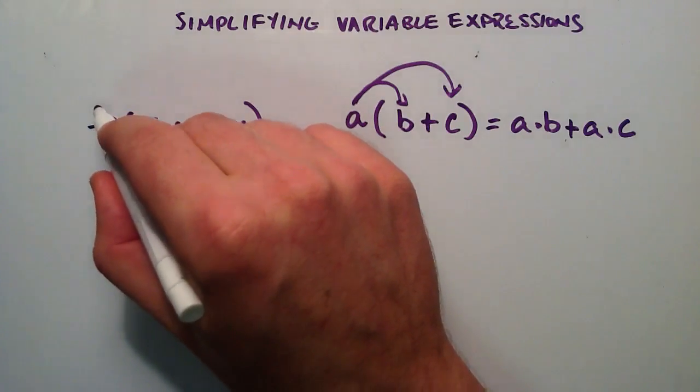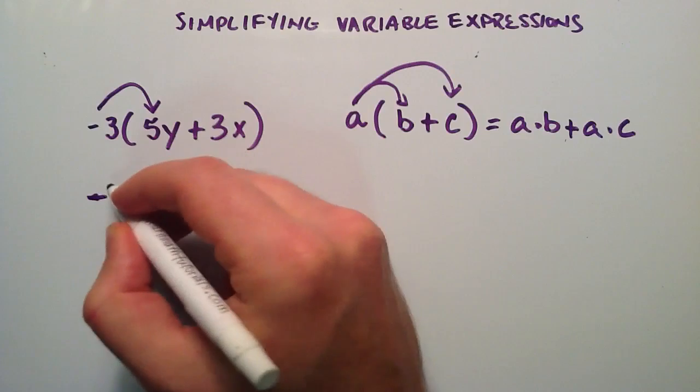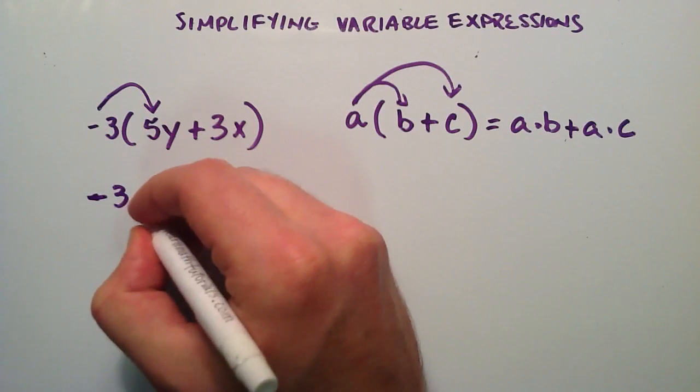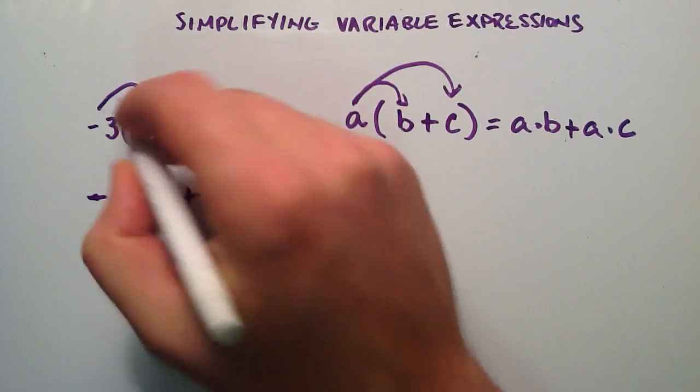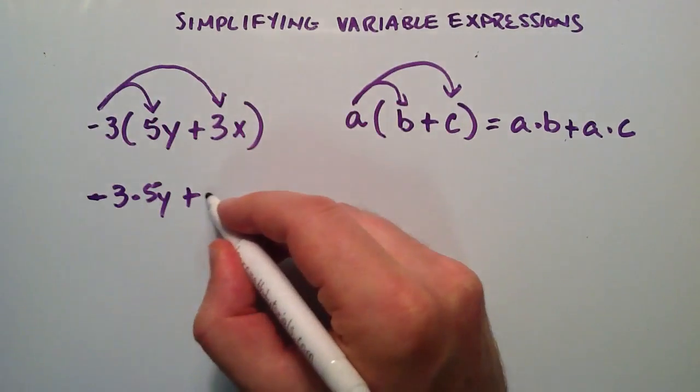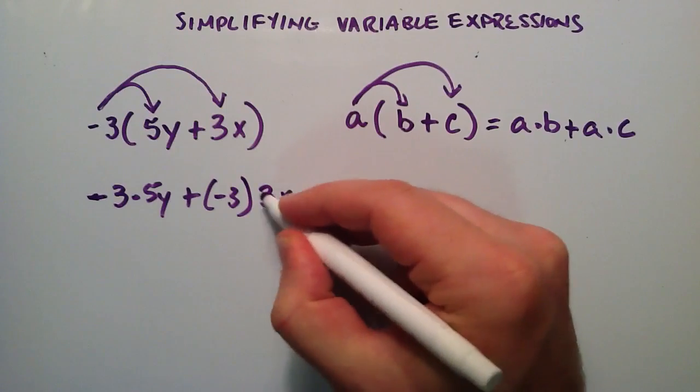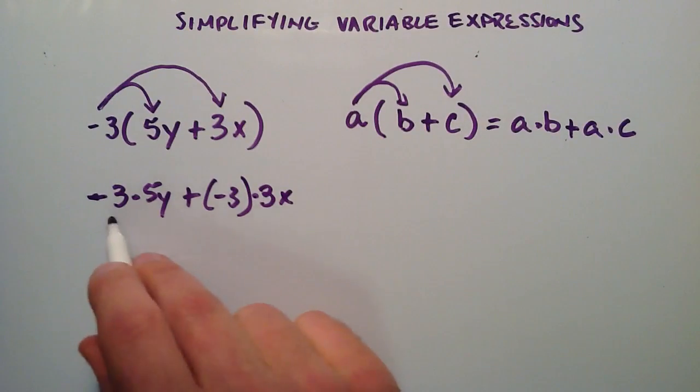So we're going to go ahead and do that to this expression here. So this is going to be negative 3 times 5Y. So we'll just go ahead and write that down. Negative 3 times 5Y plus negative 3 times 3X. Plus negative 3 times 3X. So now we're going to simplify this a little bit.